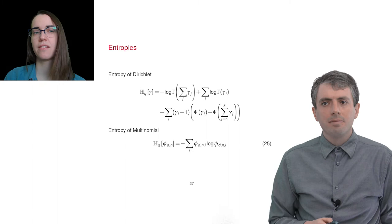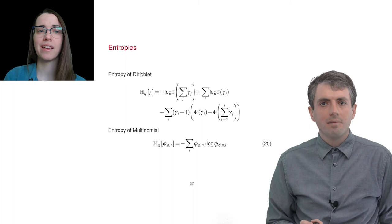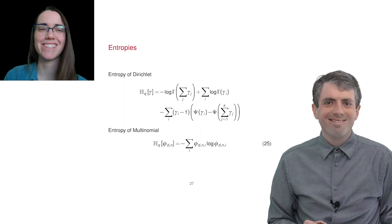The final terms are the entropy of the variational Dirichlet and multinomial. But let's not go through those since you can always just look this part up, which is, frankly, what I always do.